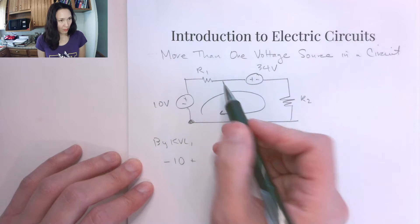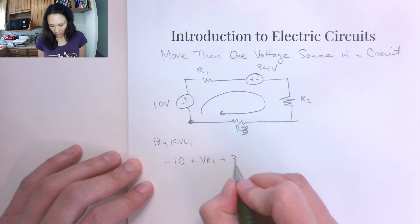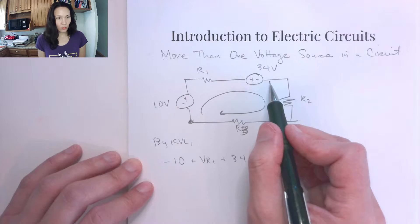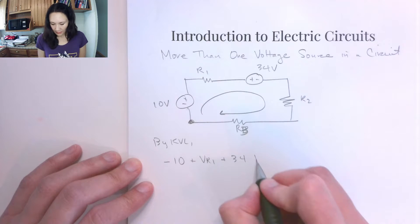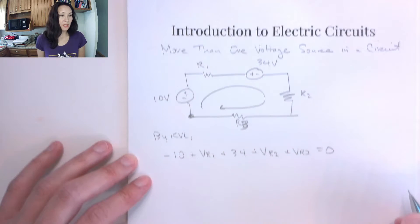So this would be a negative 10 volts, plus my voltage drop across R1, so VR1, plus 34 volts because I'm entering this through the positive terminal, plus the voltage drop across R2, plus the voltage drop across R3, and that's going to be equal to zero.